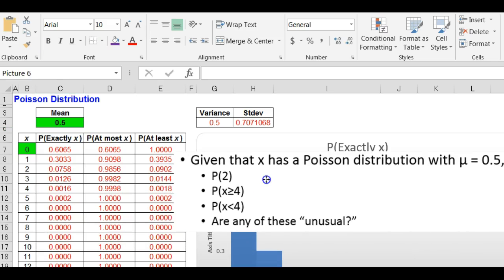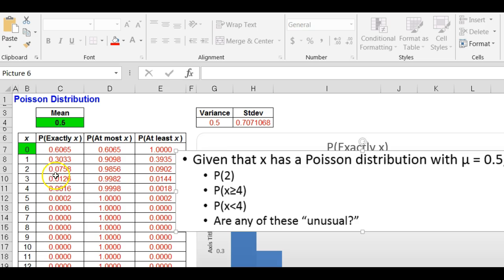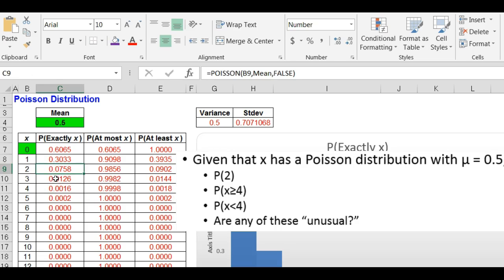What is the probability of exactly two? Well, it's 0.0758 to the right of two under exactly. Greater than or equal to four. That's at least four, which is 0.0018.